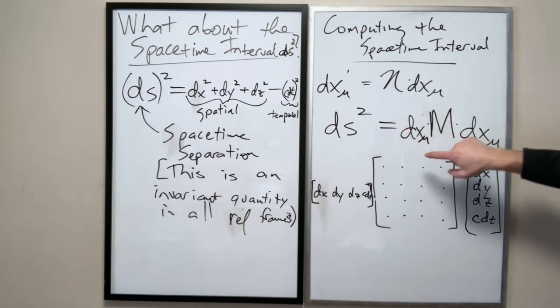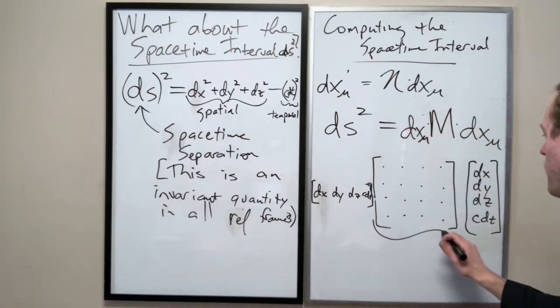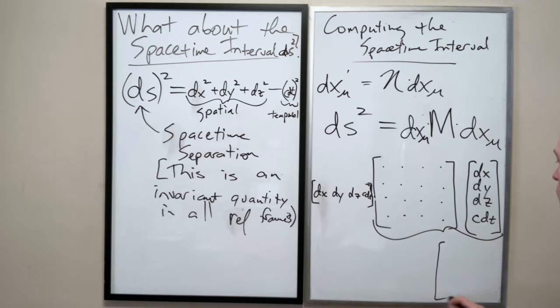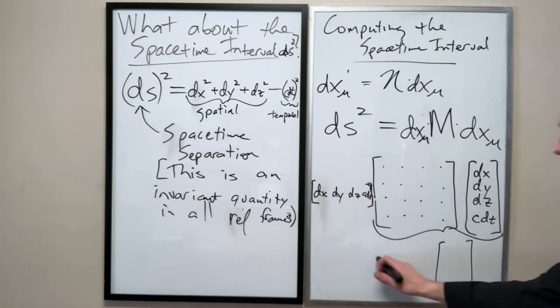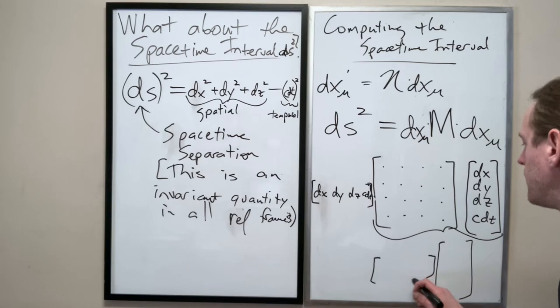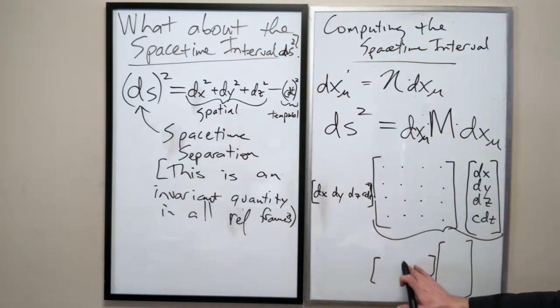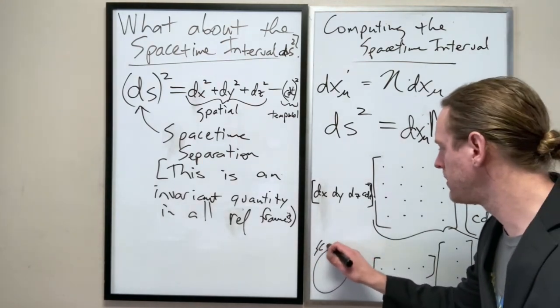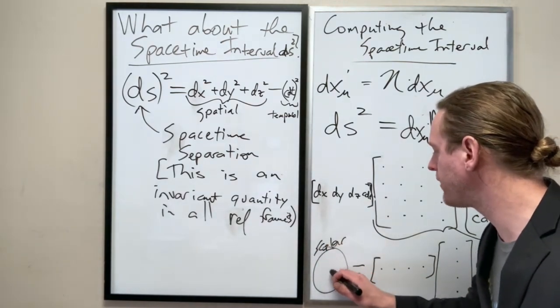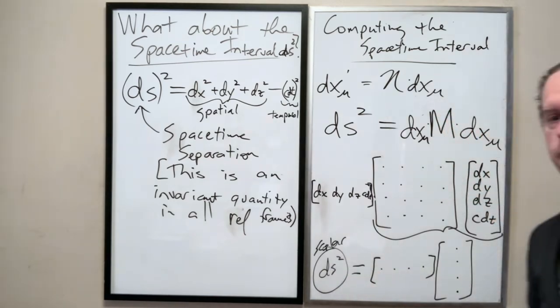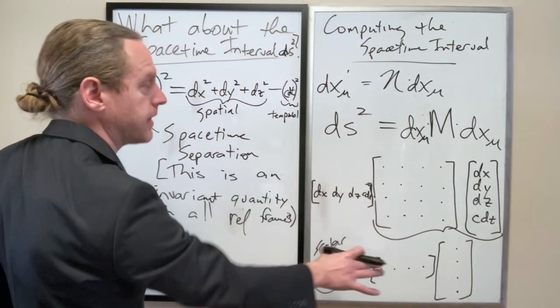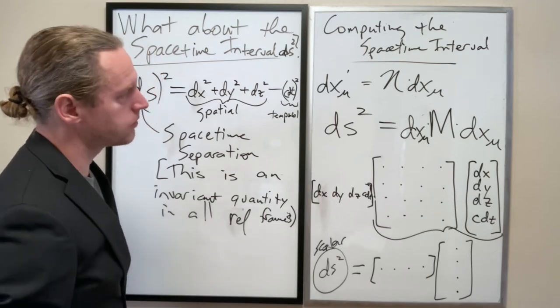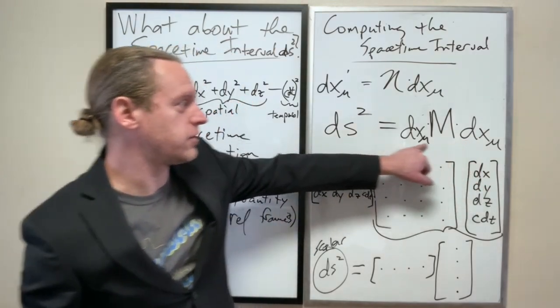Space component squared minus the time component squared gives you this spacetime invariant, or the spacetime separation. And I'm going to pause it. Again, I'm going to just state without proof. The proof is actually really nifty, and this makes it a whole heck of a lot easier. But I'm going to say this is an invariant quantity in all frames, or in all reference frames. Okay, so it's an invariant quantity. It should be the same in all reference frames. So I should be able to change all the x's into x primes, y's into y primes, t's into t primes, and so on. And what it means to be invariant in all frames is that they should all give the same answer.